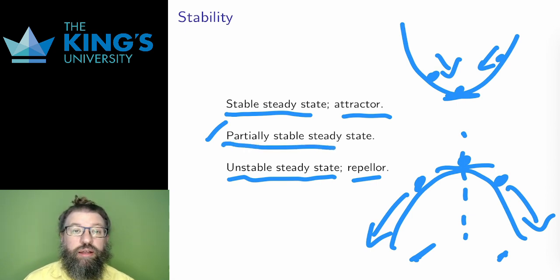You can think of this as a momentarily flat spot on the side of a hill. From one side, the ball moves towards the steady state, and from the other, it rolls away.